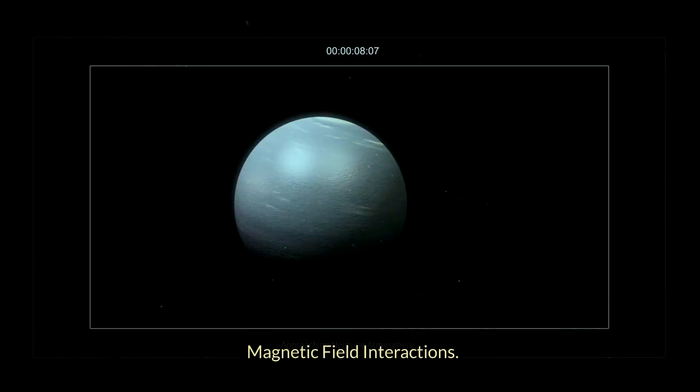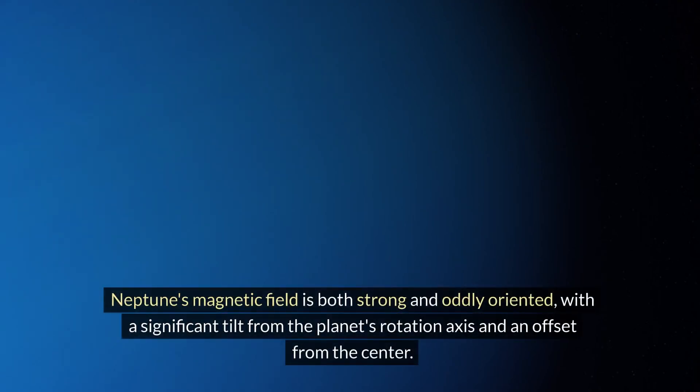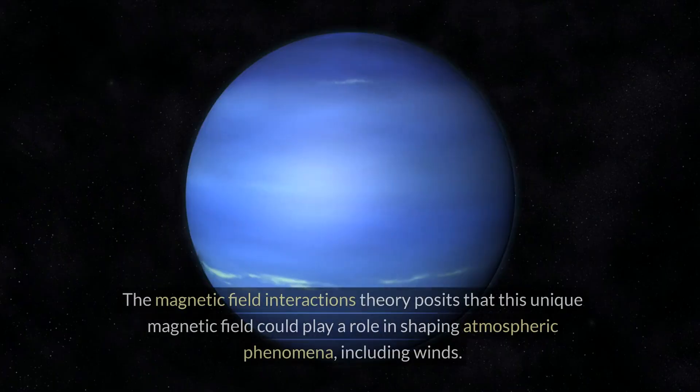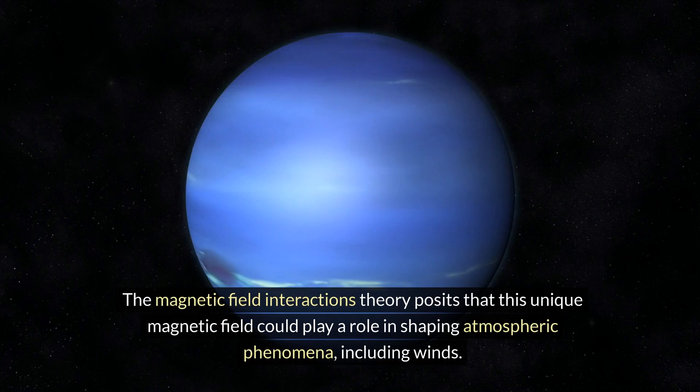Magnetic field interactions: Neptune's magnetic field is both strong and oddly oriented, with a significant tilt from the planet's rotation axis and an offset from the center. The magnetic field interactions theory posits that this unique magnetic field could play a role in shaping atmospheric phenomena, including winds.